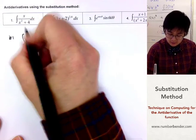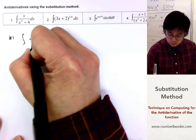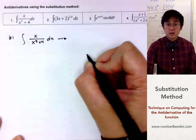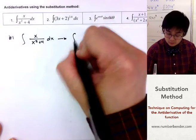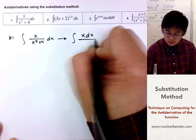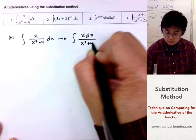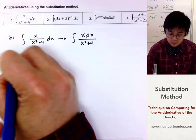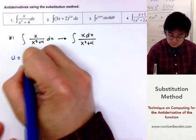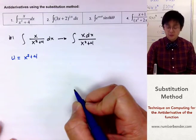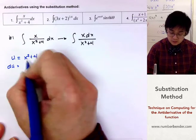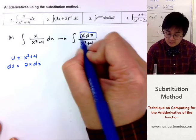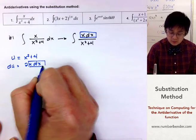We have the integral of x all over x squared plus 4 dx. I'm going to modify my integral function into x dx all over x squared plus 4. This way I'll be able to see my variable u, which is x squared plus 4, and if I take the derivative of u, which is 2x dx, I'll see that x dx is identical to my derivative function.